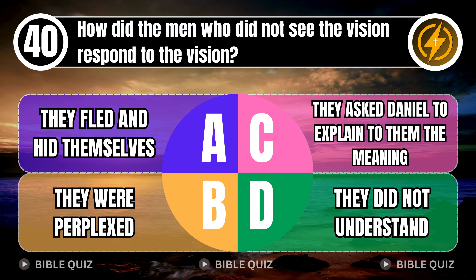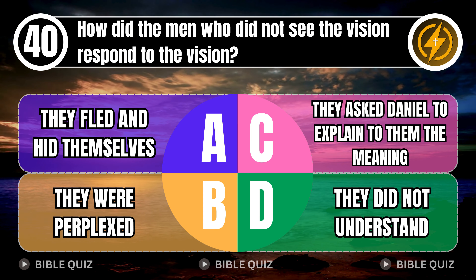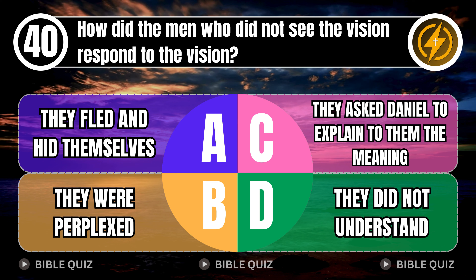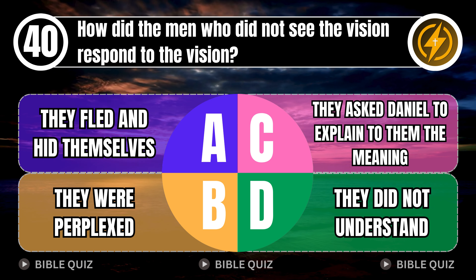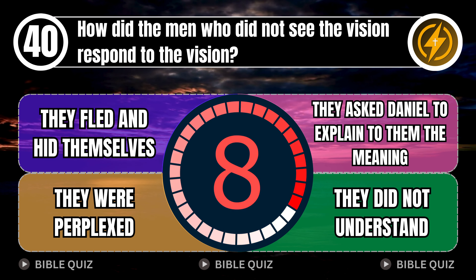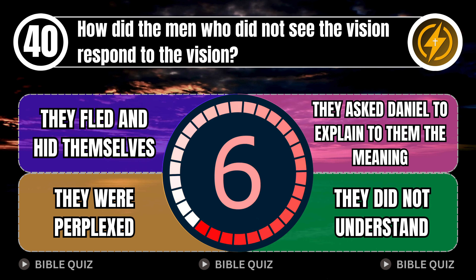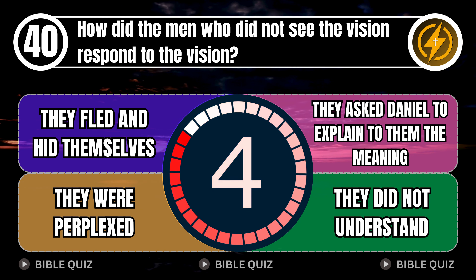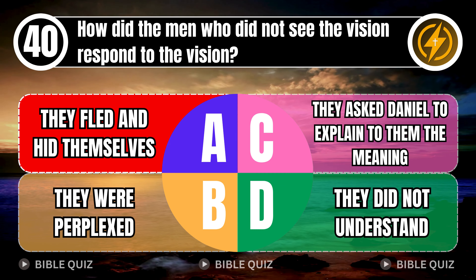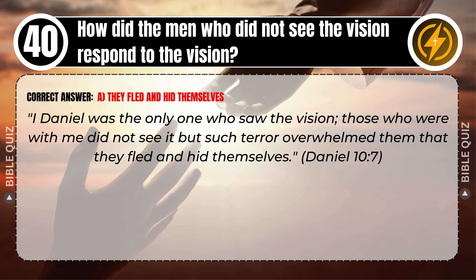Question 40: How did the men who did not see the vision respond to the vision? A. They fled and hid themselves. B. They were perplexed. C. They asked Daniel to explain to them the meaning. D. They did not understand. Correct answer: A. They fled and hid themselves. I, Daniel, was the only one who saw the vision; those who were with me did not see it, but such terror overwhelmed them that they fled and hid themselves. Daniel 10 verse 7.